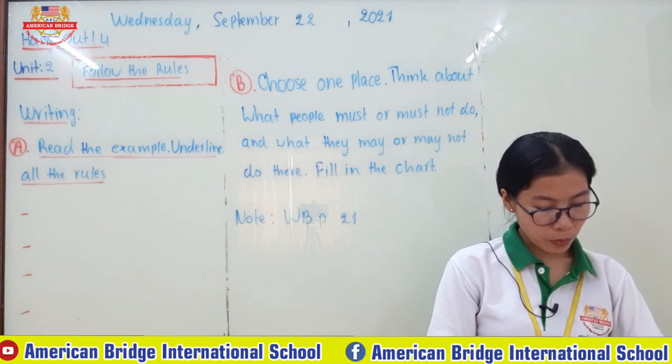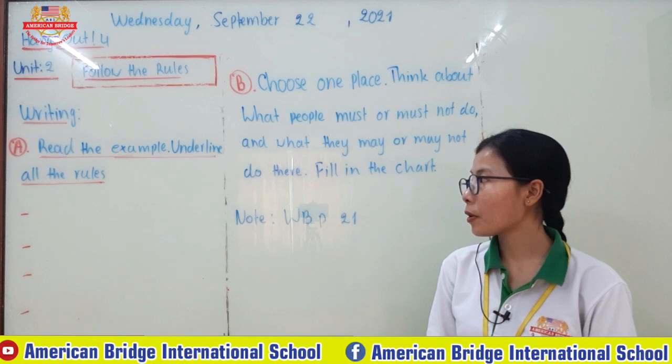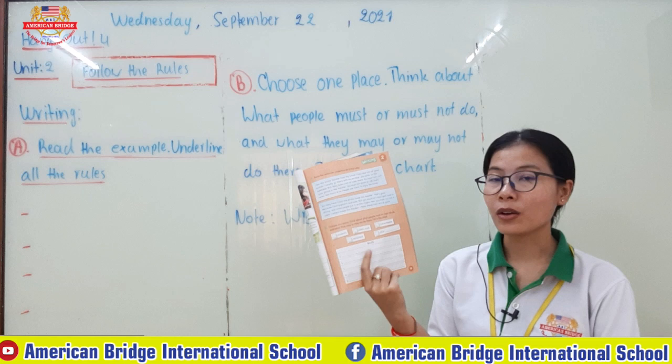Please open your book on page 29 so you can see what today's lesson is. For today's lesson you have two parts to learn. The first part: read the example and underline all the rules. So first you just read the paragraph on writing here, and then underline all the rules.